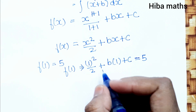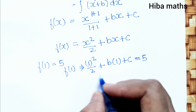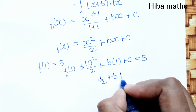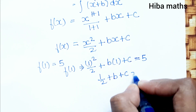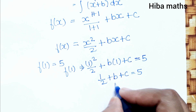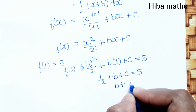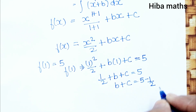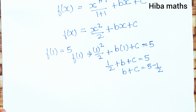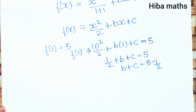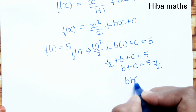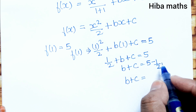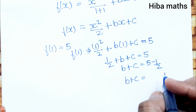We substitute x equals 1: f(1) equals 1 squared over 2 plus b times 1 plus c equals 5. That gives 1 over 2 plus b plus c equals 5. So b plus c equals 5 minus 1 over 2, which is 10 minus 1 over 2, giving b plus c equals 9 over 2. This is the first equation.